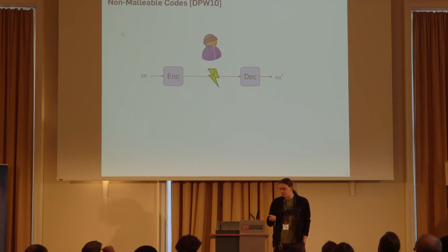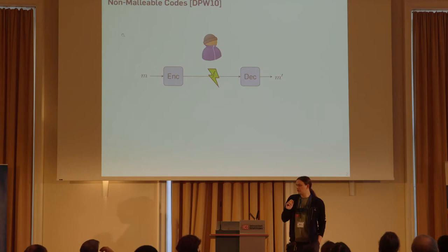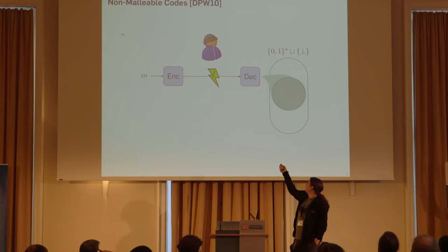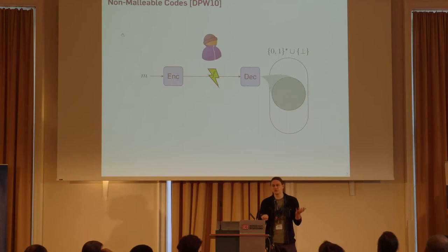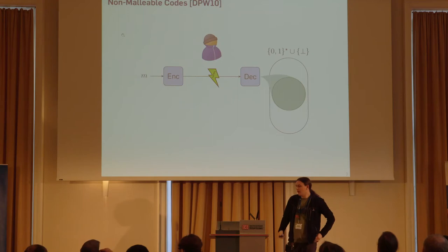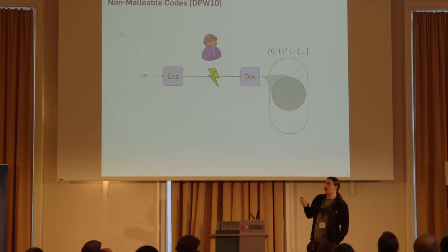The problem is that error-correcting codes only exist for relatively small classes of tampering functions, so Zimbovsky et al. introduced non-malleable codes. The idea of a non-malleable code is that we have a weaker guarantee. If a tampering function tampers with the code word, this whole process results in some distribution of possible outputs — a distribution over possible decoded words and also an error symbol, because the decoder could say this is not a valid code word and refuse to decode it. The non-malleable code guarantees that what you get is either still the original encoded word, or it's something completely unrelated to that word.